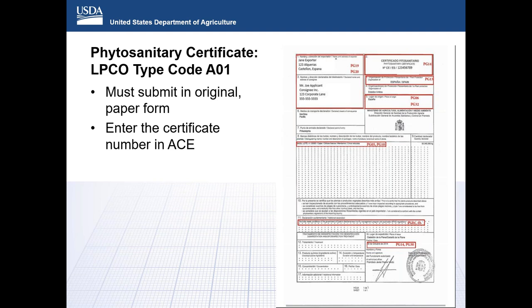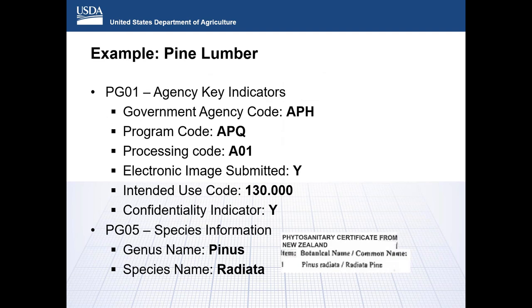Having a copy of the phytosanitary certificate will aid in the submission of the APHIS core message set. Information required in the message set may be found on certificates such as exporter name and address, importer name and address, commodity description, genus and species, treatment types, and country of export. We will now walk through a single example of filing APHIS core message set for miscellaneous and processed products. This walkthrough proceeds from PG line 01 through to the end in PG numerical order, though this may not be the order in which data is entered into your software.